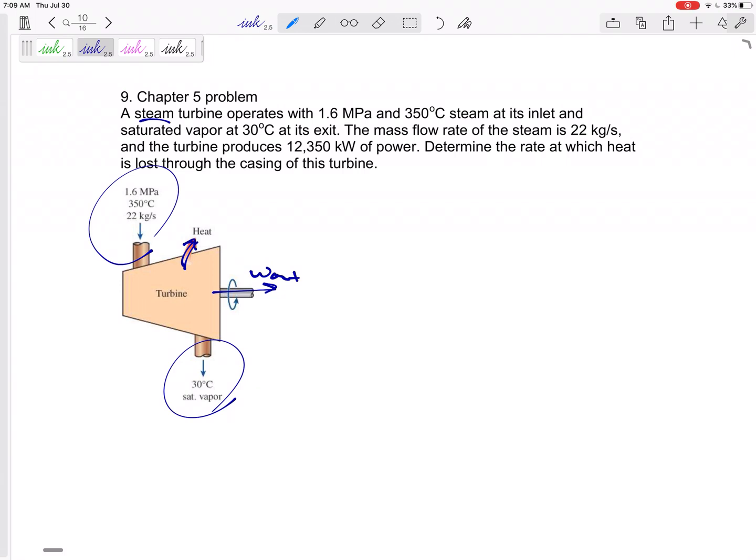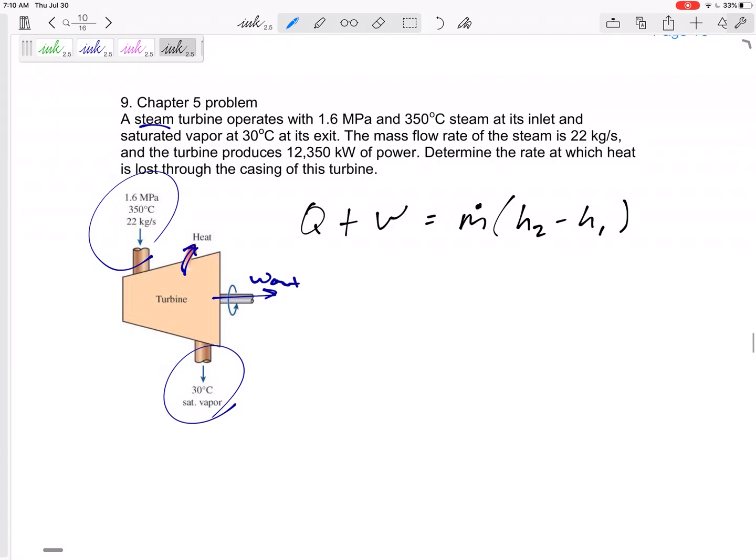It's just the H. So for steady flow devices, for steady flow devices, it was Q plus W equals, if there's one inlet and one outlet, it's the same mass flow rate in and out, this would be H out minus H in. So that's kind of our steady flow equation when there's no kinetic energy or potential energy.